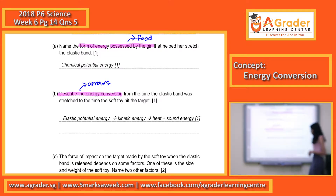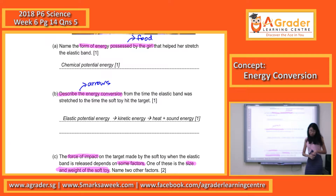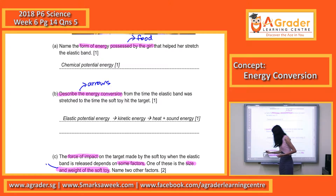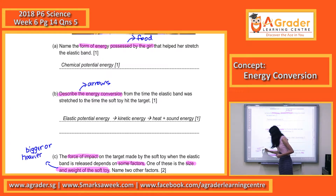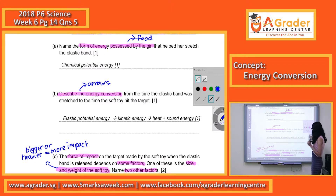Now let's look at question C. The force of impact on the target made by the soft toy is dependent on several factors. We know that force of impact depends on certain factors, and one of them is the size and weight of the soft toy. The bigger or heavier the soft toy, the greater the impact. The question is asking you for two other factors, so you have to look out for factors that affect potential energy.